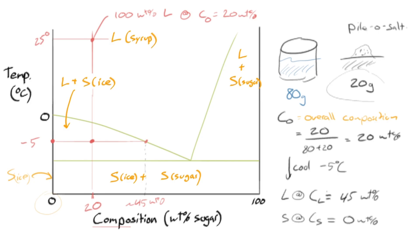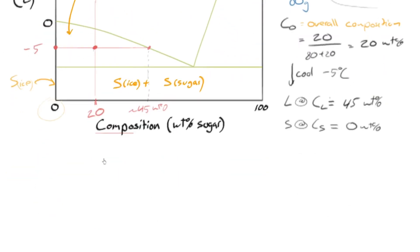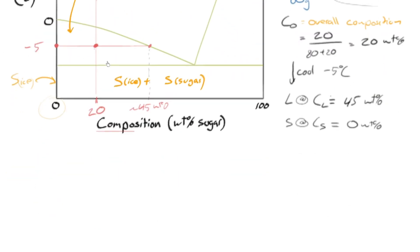In our previous video, we had come up with this hypothetical example: 20 grams of sugar added to 80 grams of water to make a 28% sugar syrup that we then cooled down to minus 5°C. So I want to consider this point right here, and let's take the system here to get us all on the same page — what's it going to look like?